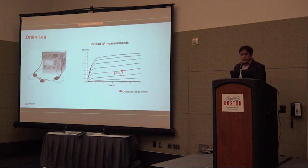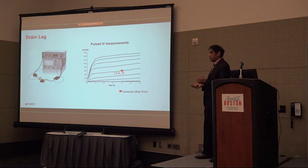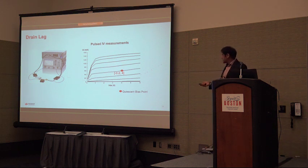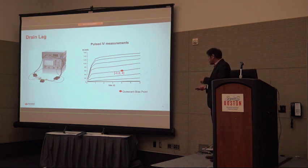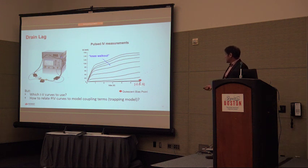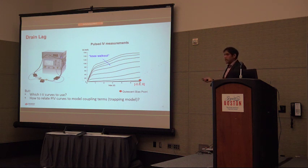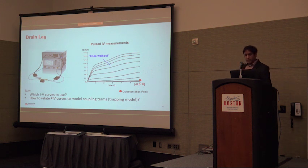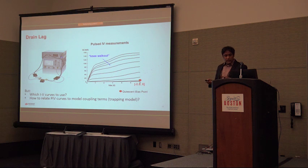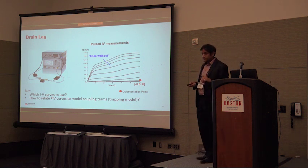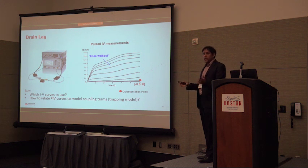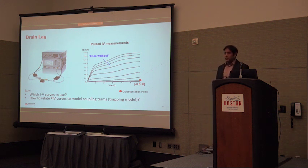Pulsed IV measurements involve sitting at a quiescent bias, quickly pulsing to a target voltage and current, then returning. If we change the quiescent bias point — say to 0.8 V gate and 6 V drain — all the current curves change. We call this effect 'knee walkout.' For every quiescent bias point there's a different set of IV curves, creating an infinity of IV curves. Capturing all of that behavior is a significant modeling challenge.